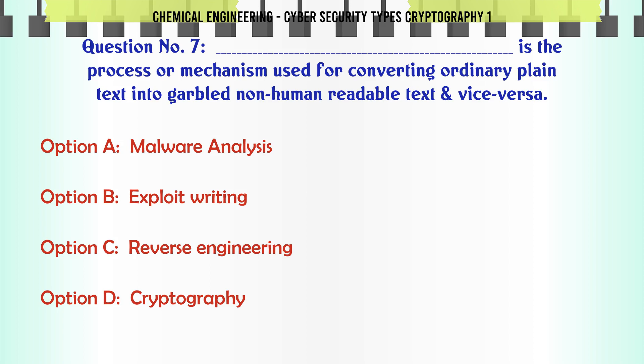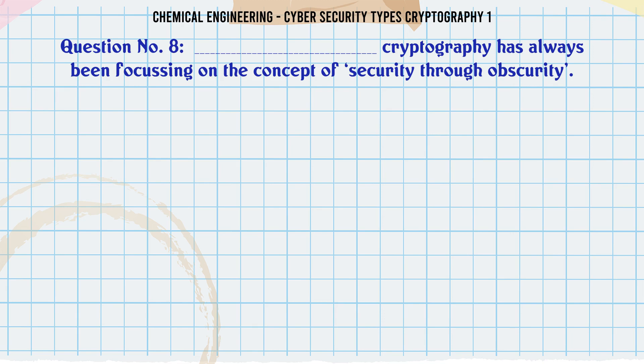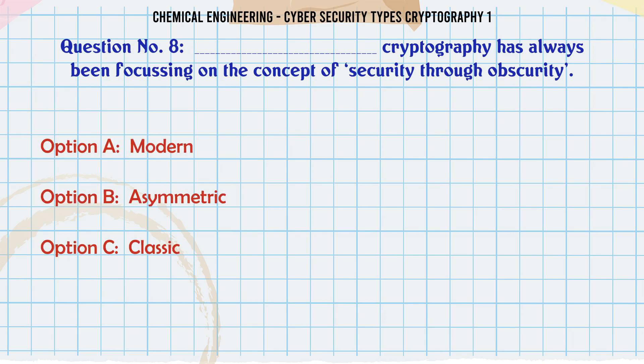The correct answer is Cryptography. Which is the process or mechanism used for converting ordinary plain text into garbled, non-human readable text and vice versa? A) Malware analysis, B) Exploit writing, C) Reverse engineering, D) Cryptography. The correct answer is Cryptography.